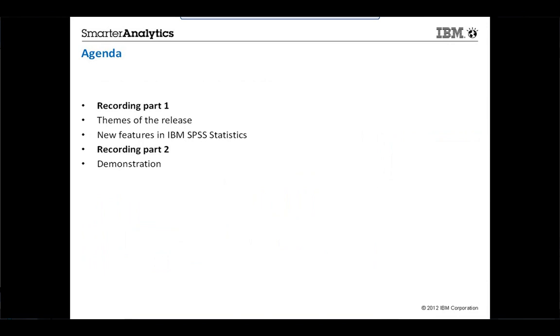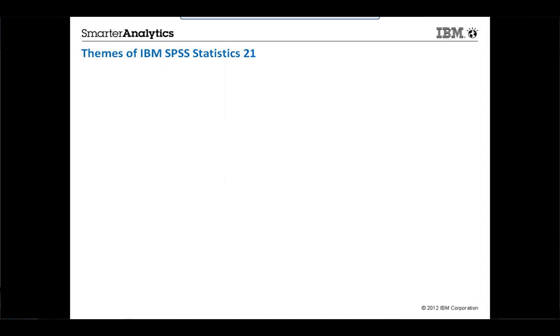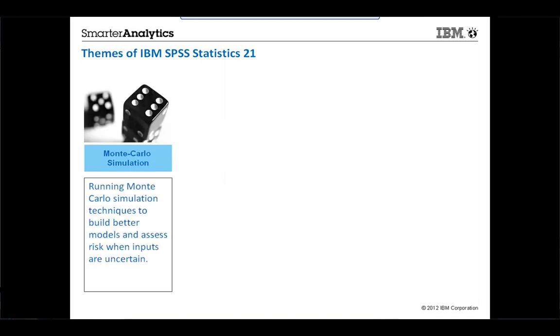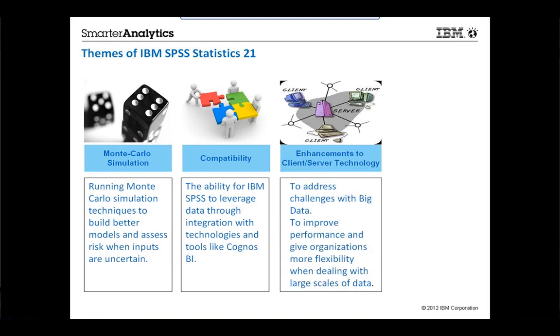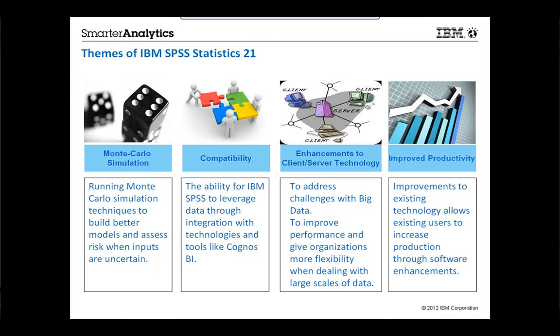Starting with the four themes of IBM SPSS Statistics 21: first we have Monte Carlo simulation, a way to build better models and assess risk when inputs are uncertain. Then we have compatibility, the ability for SPSS to play well with others through integration with technologies and tools. Enhanced client survey technology to improve performance with large scales of data. And fourth, improved productivity through software enhancements.